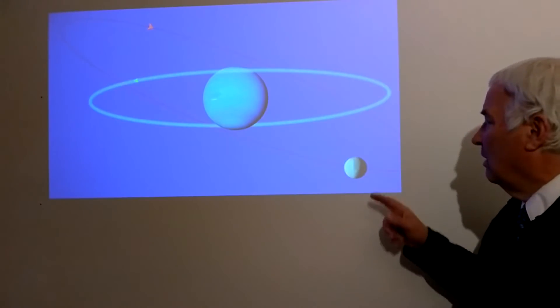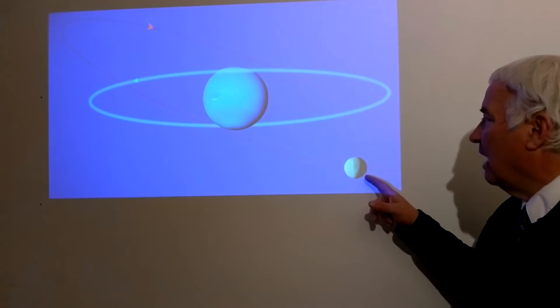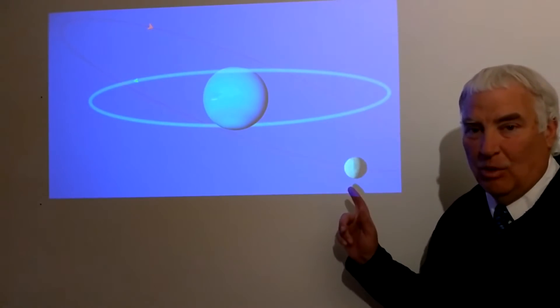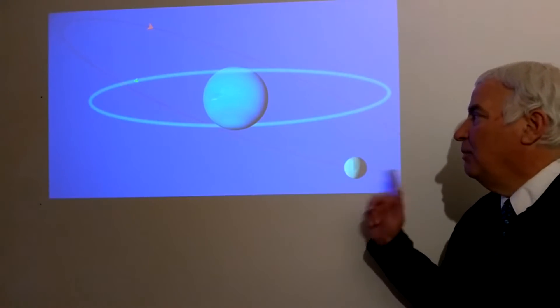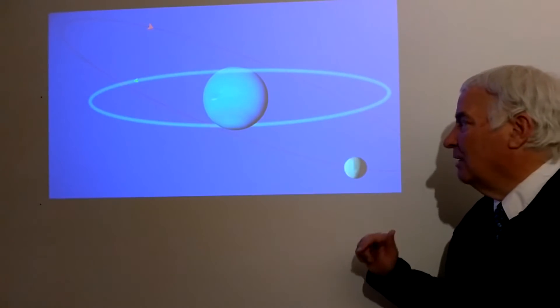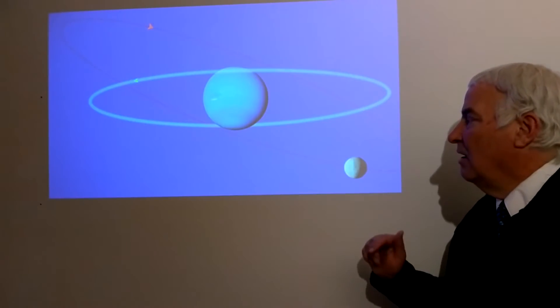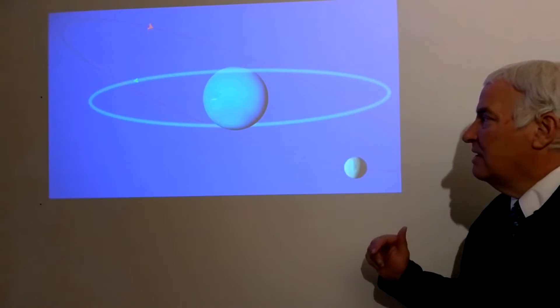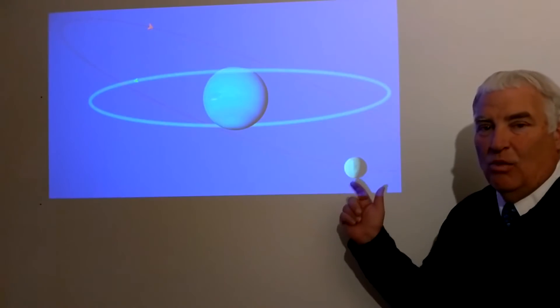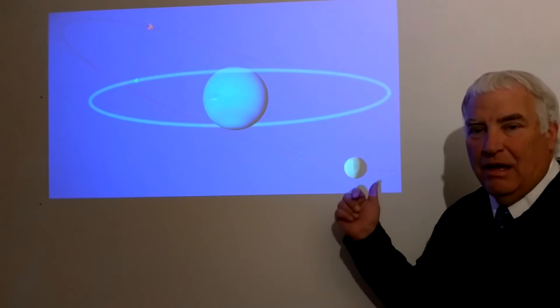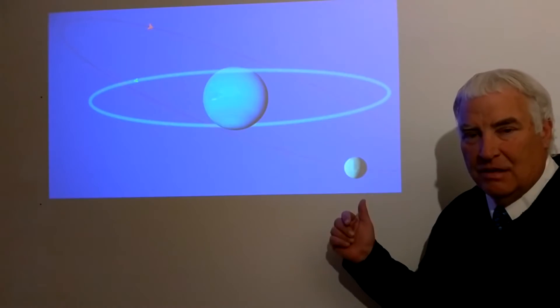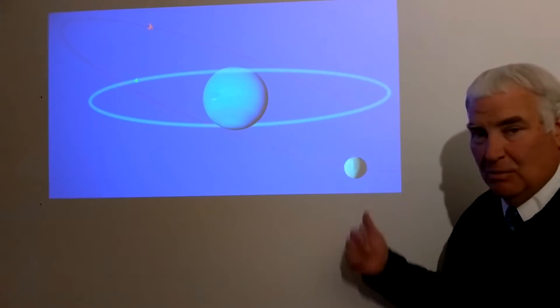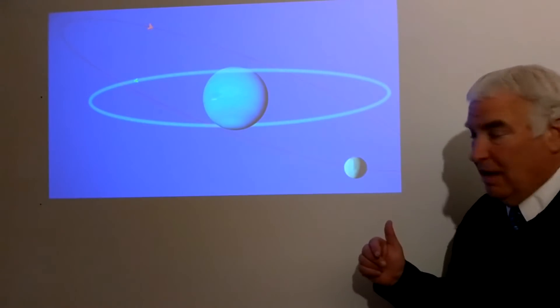This means that Triton has an unstable orbit and it will not always be here. It will eventually crash into Neptune. This is not a stable configuration; it is slowly spiraling into Neptune. This is a strong indication that Triton was captured. It's a Kuiper Belt object that was on its own orbiting the Sun and came too close to Neptune and was captured into this retrograde orbit, which will cause it eventually to crash into Neptune.